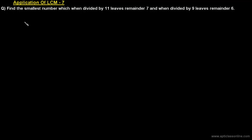In this class we will extend our discussion of application of LCM further with the help of this example. This is a different kind of example from what we have discussed in previous classes. Find the smallest number which when divided by 11 leaves remainder 7 and when divided by 9 leaves remainder 6.